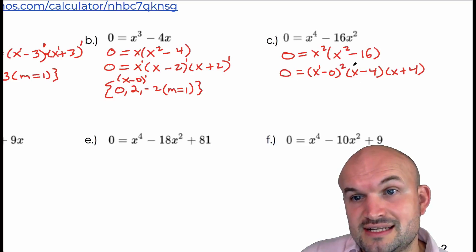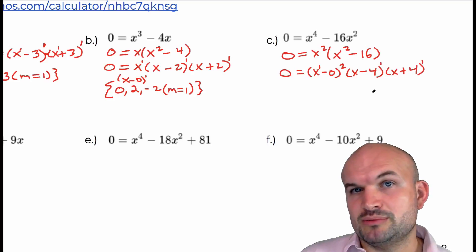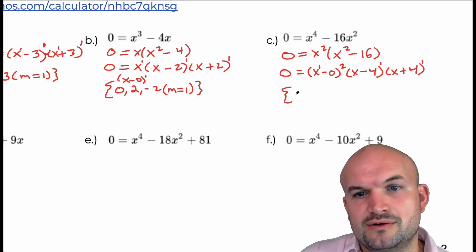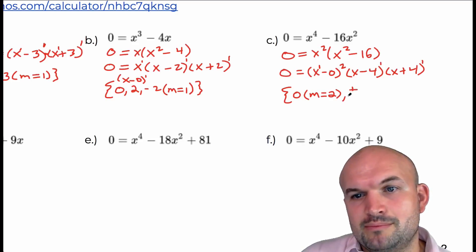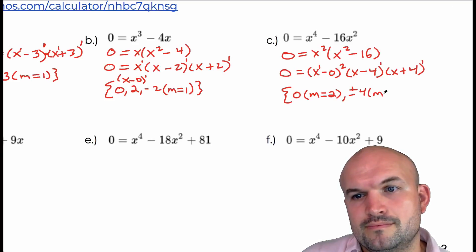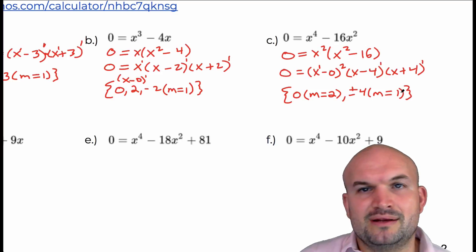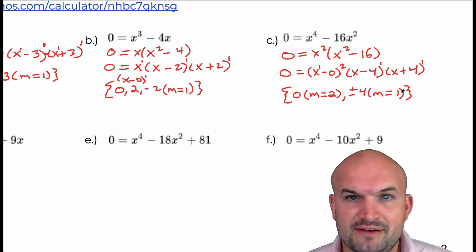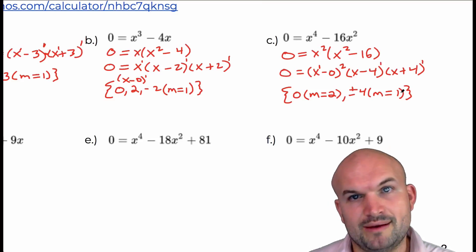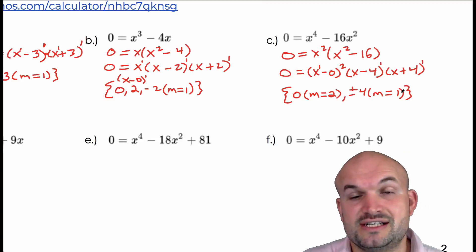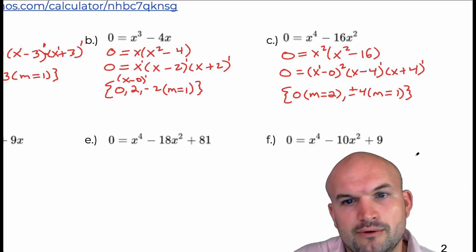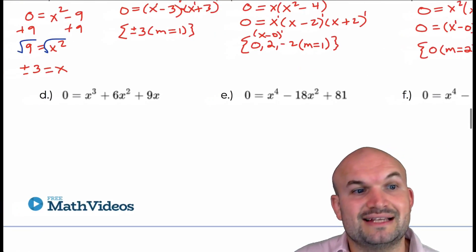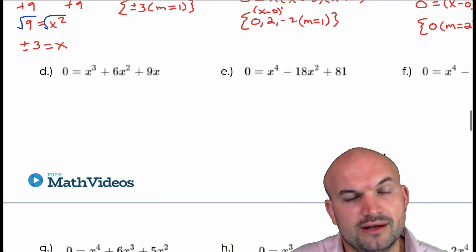So now I have some different multiplicities. The zero at zero has even multiplicity, while the others have odd multiplicity. My solution set: zero with multiplicity two, and plus or minus four with multiplicity one. How you write this notation depends on what your teacher asks for — you can label each zero with its multiplicity or group them if they share the same multiplicity.